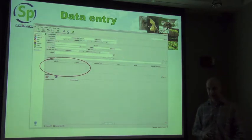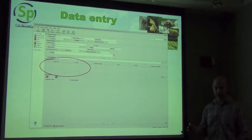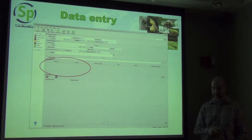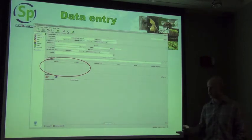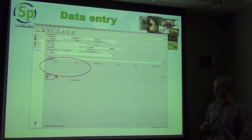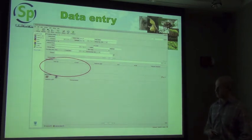Every collection object is associated with a set of preparations. You can have different preparations associated with the same collection object — for example in ichthyology: wet specimens, cleared and stained specimens, skeletal specimens, tissues, etc., which are all preparations of the same object. There is a one-to-many relationship between preparations and the collection object itself.